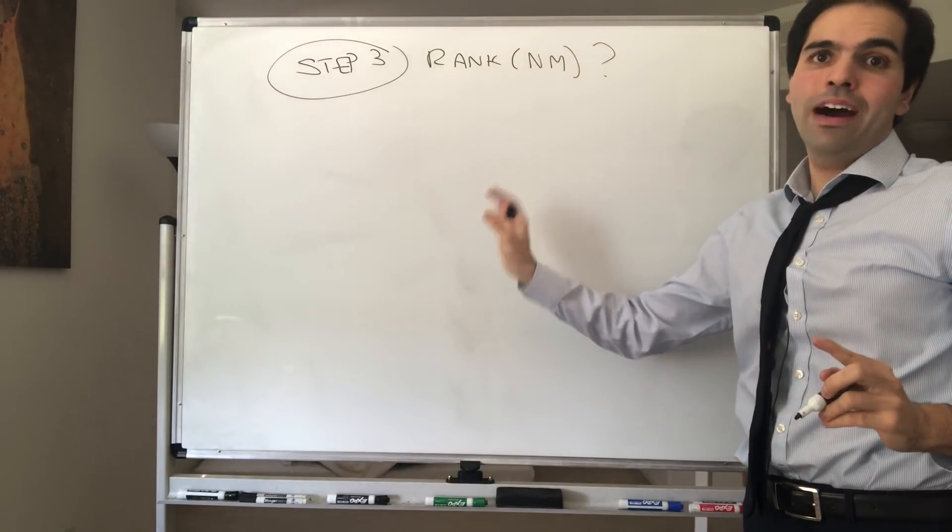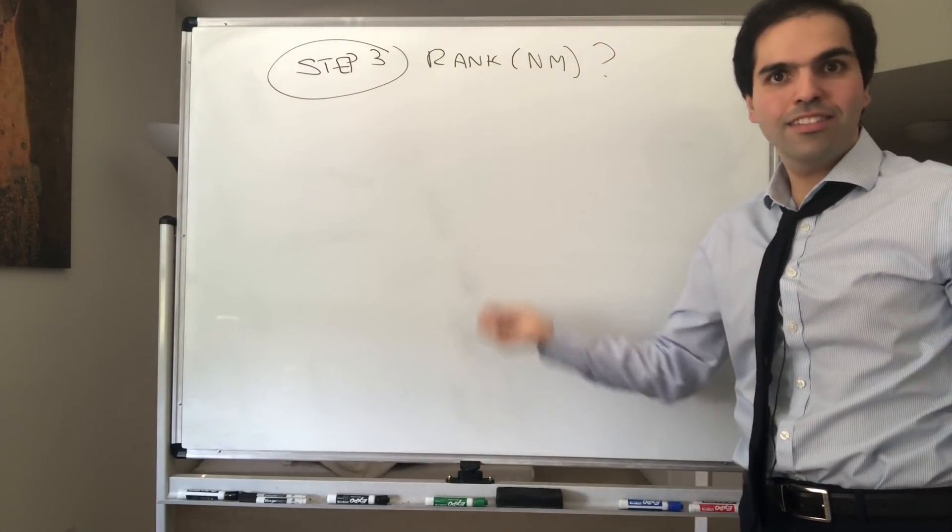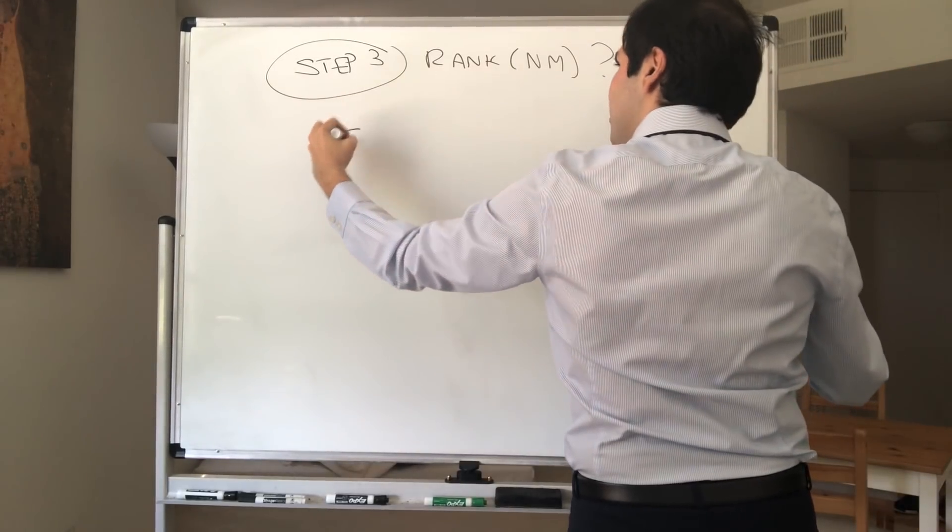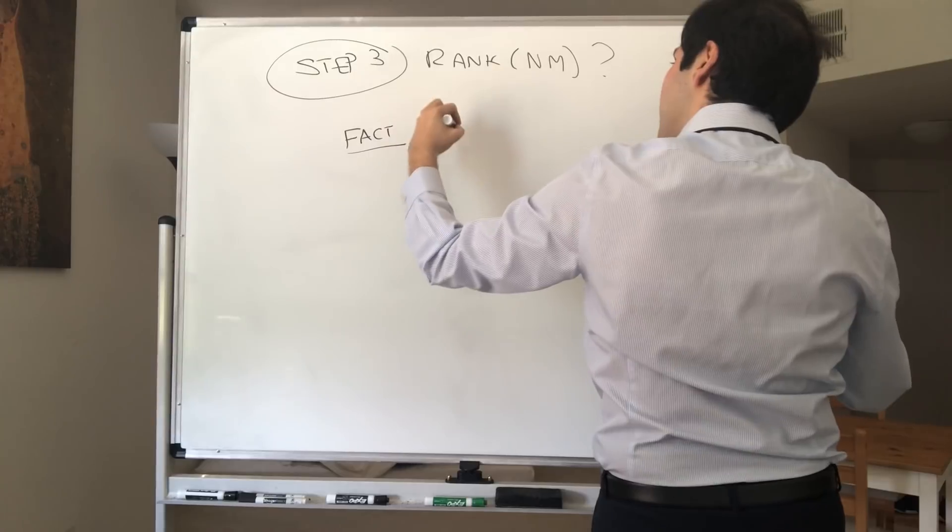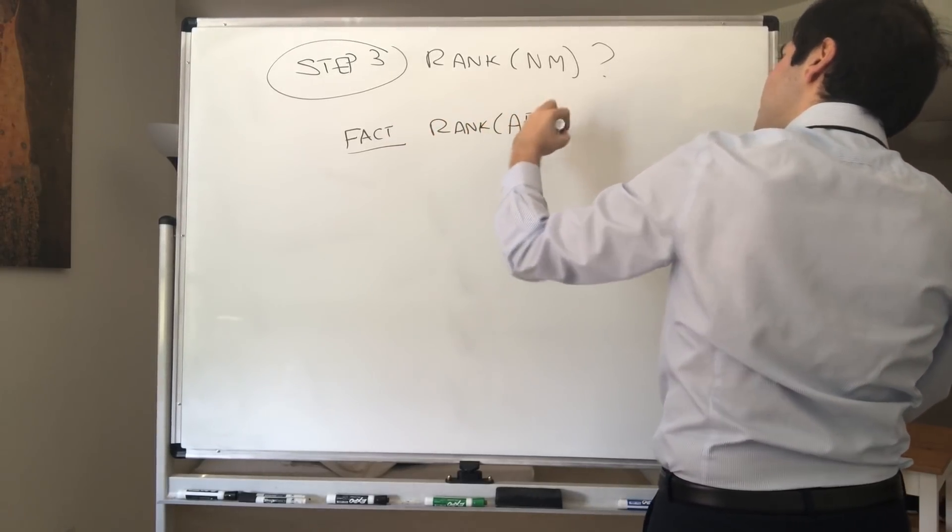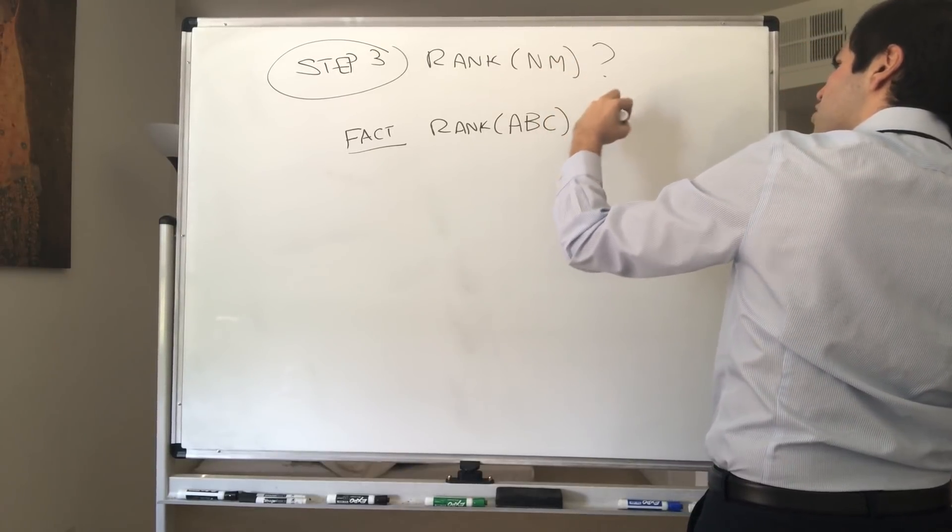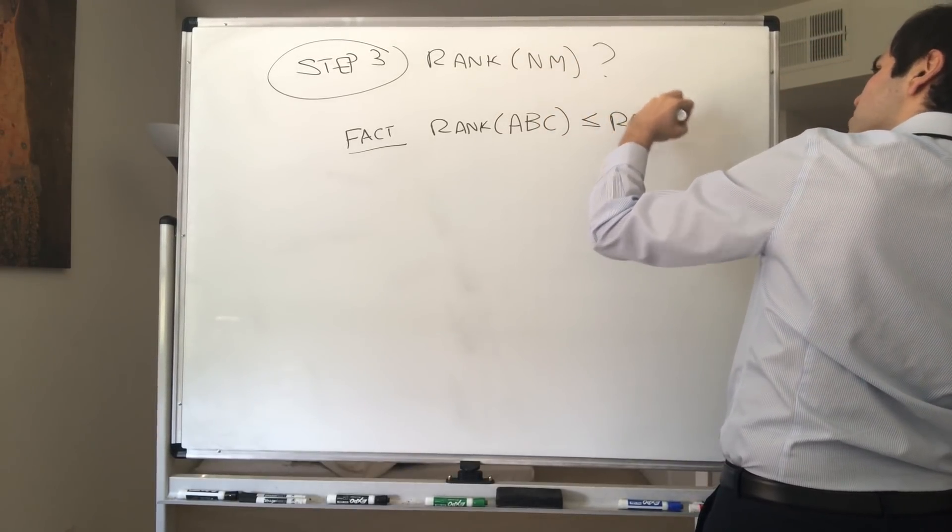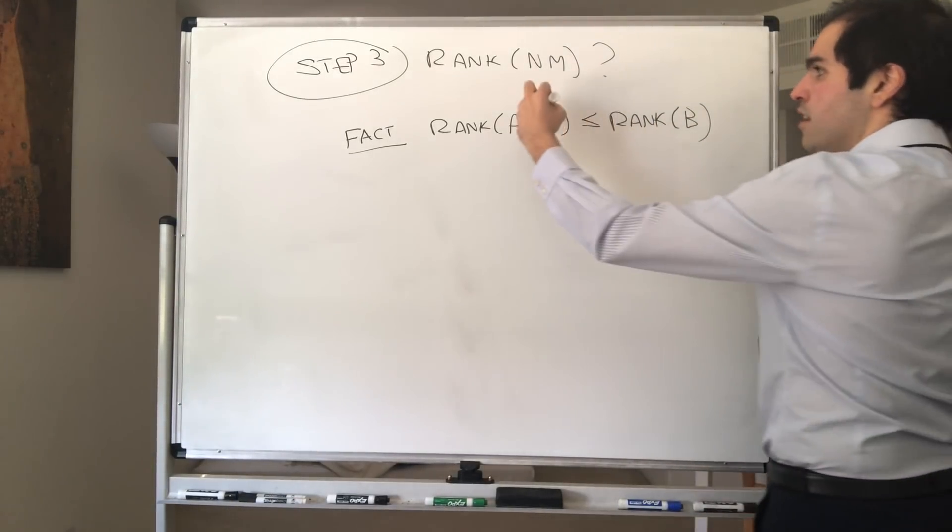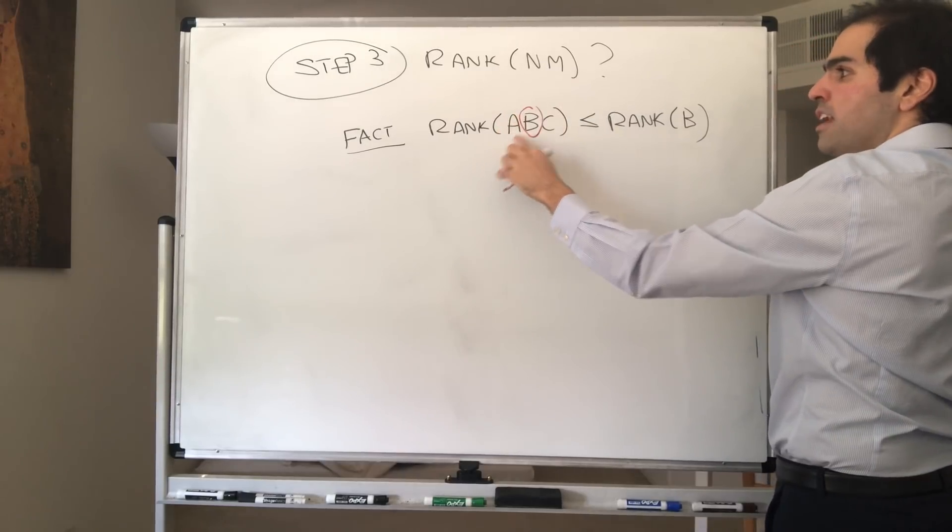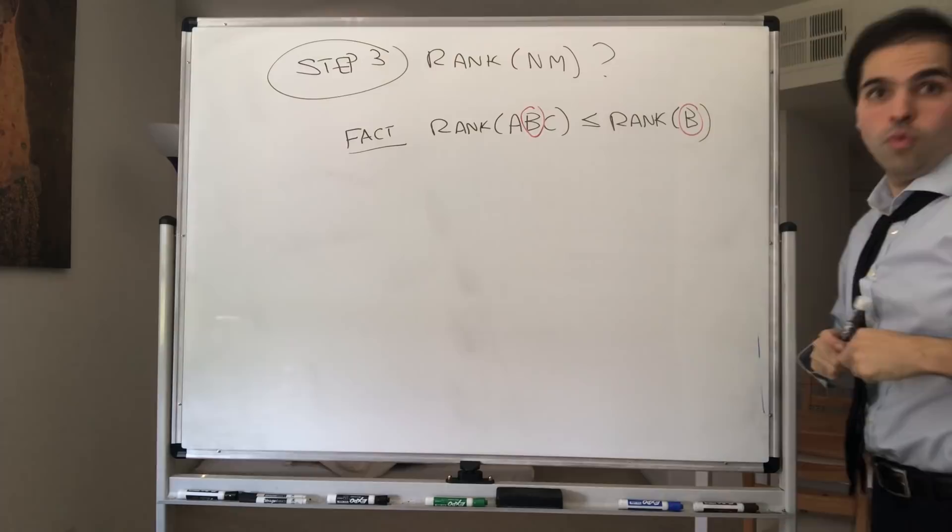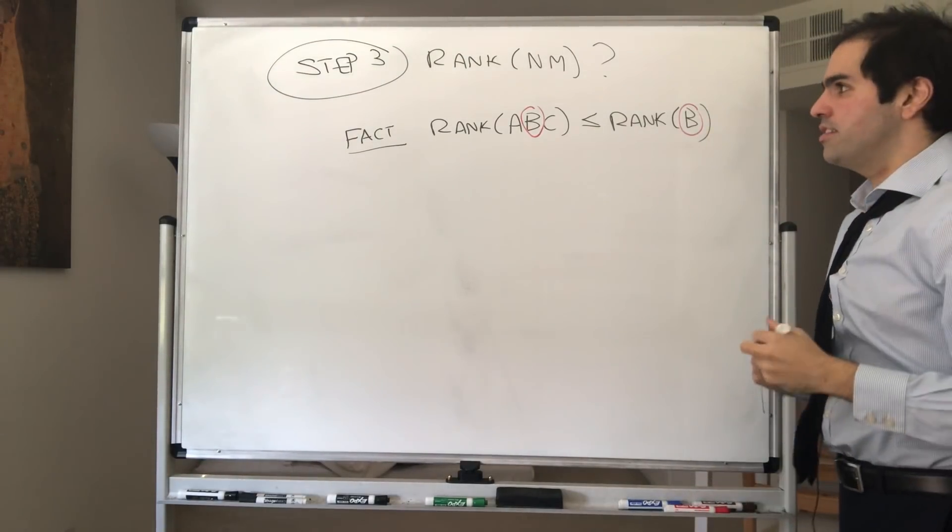And I would like to remind you there's a useful fact about ranks that will be useful here. So in general, in fact, the rank of any matrices ABC is less than or equal to the rank of B. So in other words, multiplying to the left or to the right by a matrix just makes the rank worse.